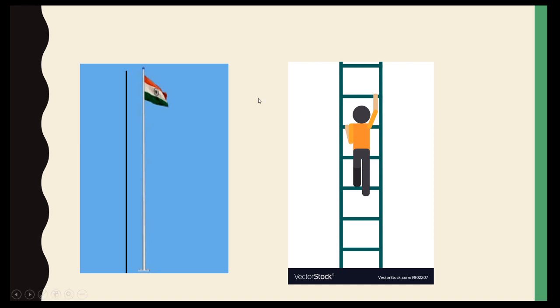See here is a flag with a pole. Can you see a line in this photo? Yes. The pole is a line. And same as in the picture of ladder. The both sides of ladder are forming lines. This side is a line and this side is also a line.